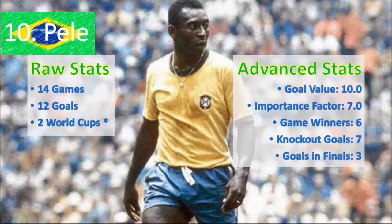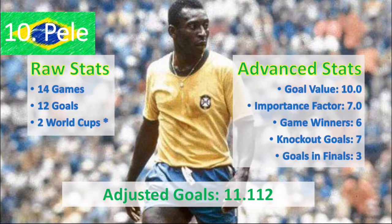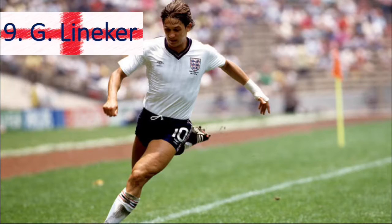Pelé has three goals in World Cup finals — one in 1970, the famous header, and two in 1958, where his first goal is probably one of the best ever scored in a World Cup final. Summarizing all factors, his adjusted goals total is 11.112, placing him at number 10.